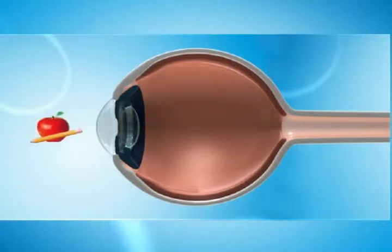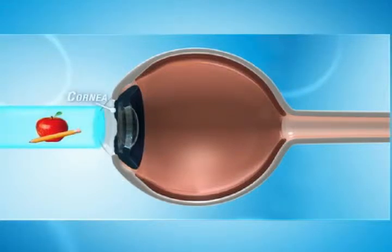Everything you see reflects light into your eyes. The light enters the eye through the clear, dome-shaped cornea, passes through the pupil, and through the lens of the eye.